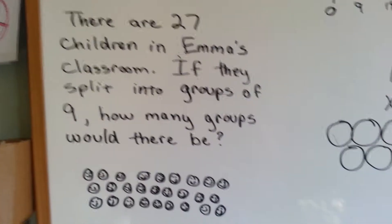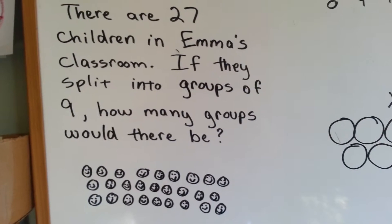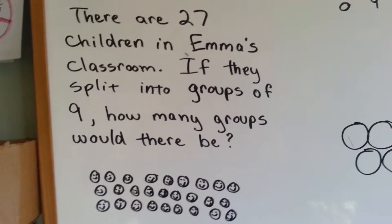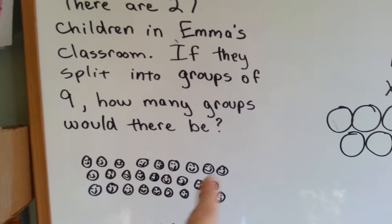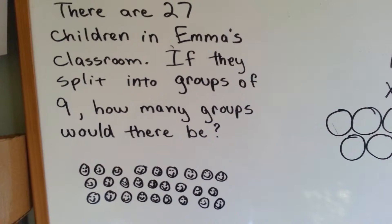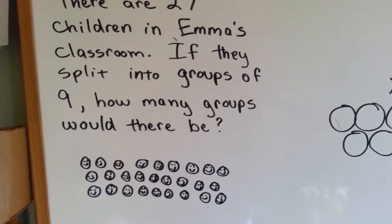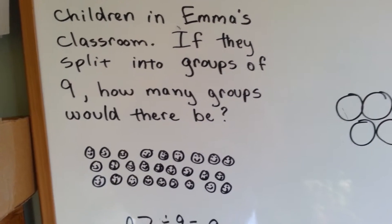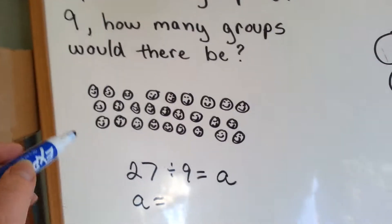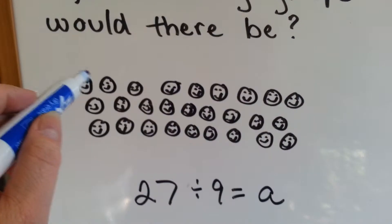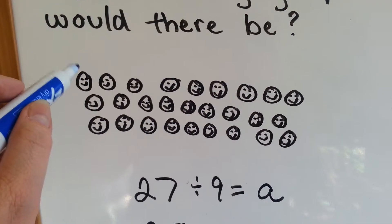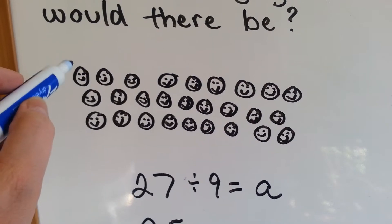We have a word problem here. I'm going to use my favorite person, Emma. There are 27 children in Emma's classroom. Here's the 27 children. If they split into groups of 9, how many groups would there be? So we're going to have to put 9 happy little faces of Emma's classroom children into different groups.